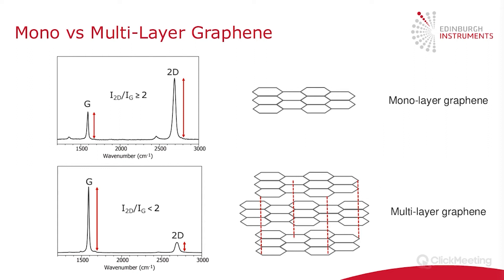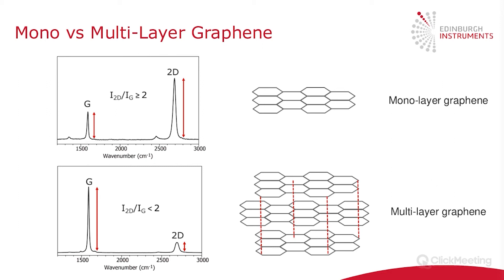With monolayer graphene, you typically have the scenario where the 2D band is at least twice as high as the G band — a ratio of two or greater is a good indication of monolayer graphene. When you move to multilayer graphene, the G band intensity increases because you now have more layers, and the 2D band decreases and broadens as it splits into multiple peaks, so this ratio becomes lower than two. You can map across the surface to determine which regions are monolayer and which are multilayer.